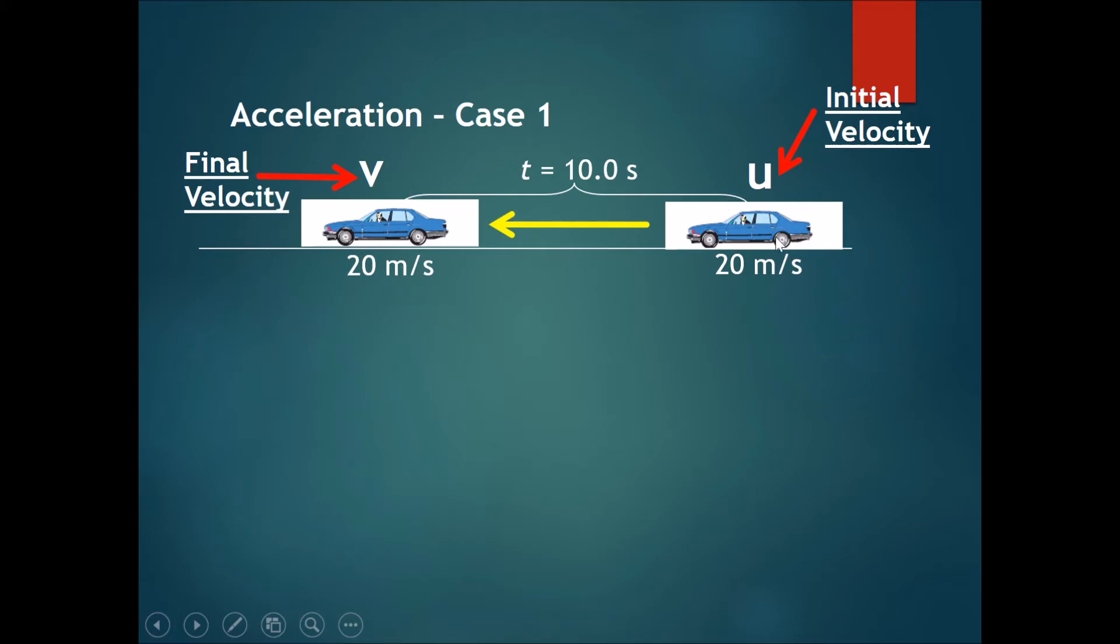The time taken to travel from here to here is 10 seconds. So how do we do the calculations? a equals V minus u over t, which is equals to 20 minus 20 divided by 10. And that should get me an acceleration of 0 meters per second squared.